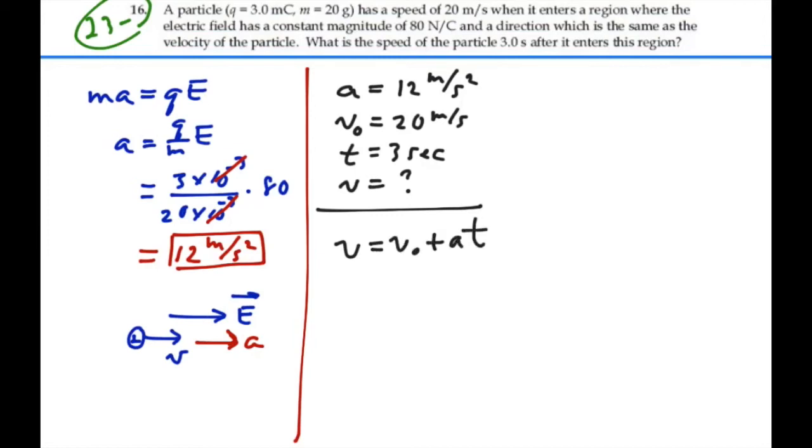Velocity equals initial velocity plus acceleration times time. And in this case, that will be 20 plus 12 times 3, 36 plus 20, or 56 meters per second.